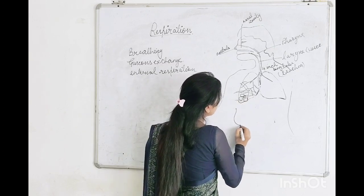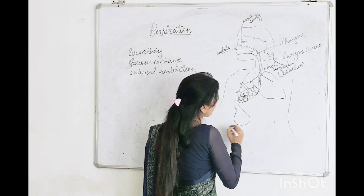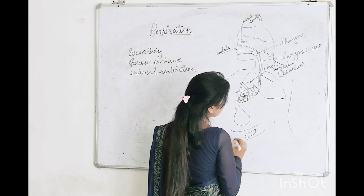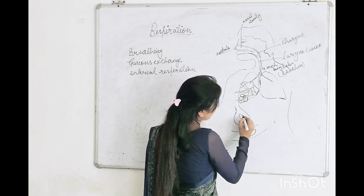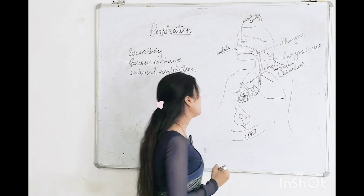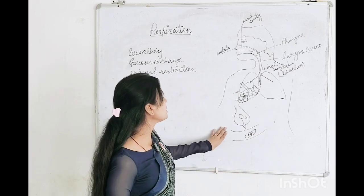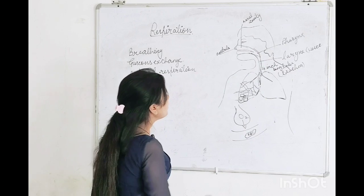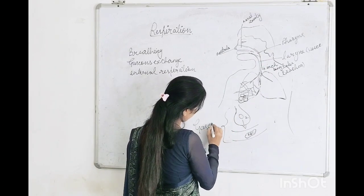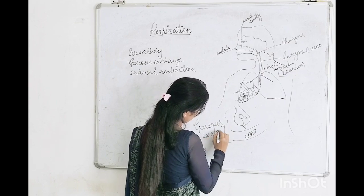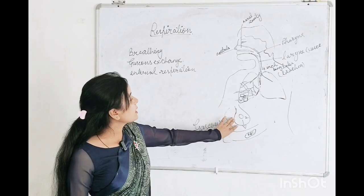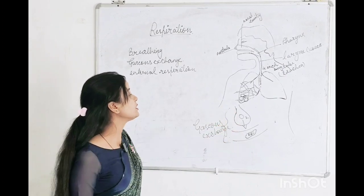From the alveoli, air passes into the blood vessels where RBCs are present, and the air passes into the RBCs. This pathway up to here is the process of breathing. But from alveoli to blood vessels, this side is called gaseous exchange — where gaseous exchange takes place.